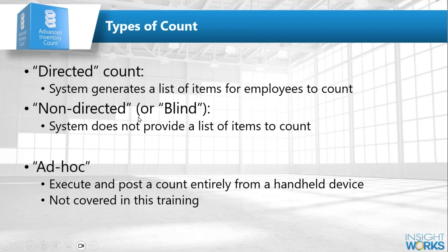We're going to focus today on scanner-based counting, though everything we discuss also applies to paper-based counting aside from the non-directed count. Non-directed won't work well on paper because you'd have to write down every part number you find. For paper-based counts, you'll do the directed count — generate a list of items, print count sheets, and use those.